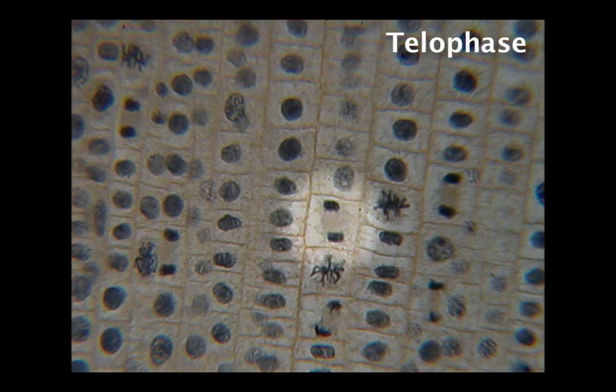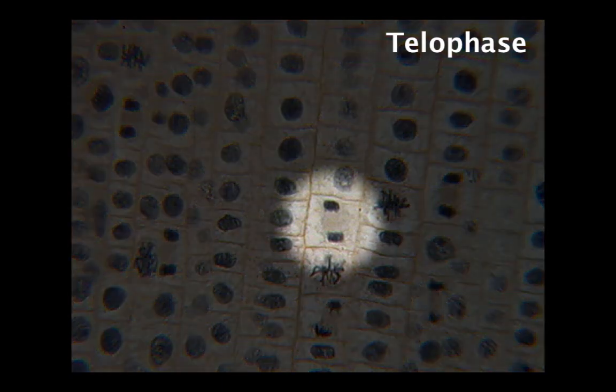This cell is going through telophase. The nuclear membrane is reforming, and the chromosomes are uncoiling to form chromatin, so you see a much darker dot, two dots in the same cell, in other words, two nuclei in the same cell.